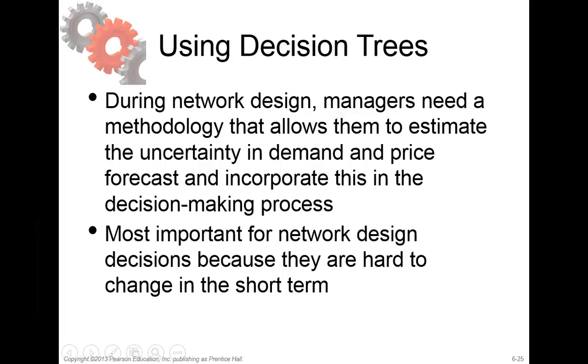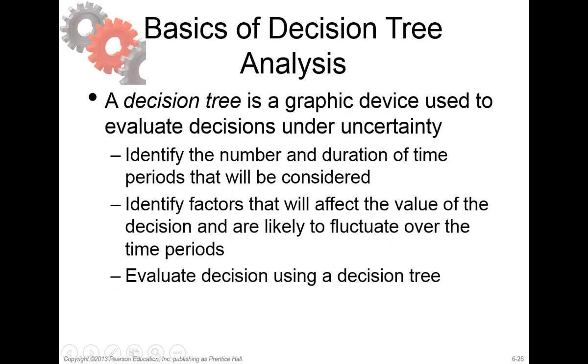In decision trees it is important that these are network design decisions because they are hard to change in the short term, so you have to cope with that. Decision trees are a graphic device used to evaluate decisions under uncertainty, and this last part - under uncertainty - is very important in decision trees because you do not know what your revenue will do in a couple of years and nor will you know what the cost of warehouses will be. Uncertainty is a very important part in using decision trees.